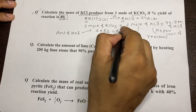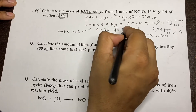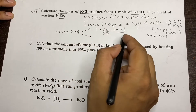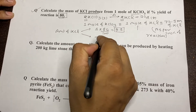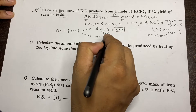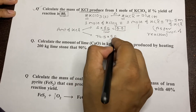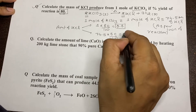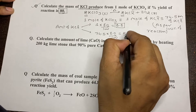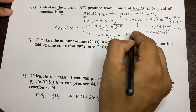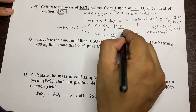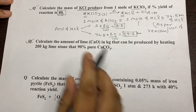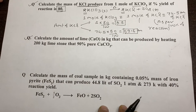That gives 0.8 moles, or in terms of mass: 74.5 grams multiplied by 80%, which gives 59.6 grams of KCl. Now we can take one more example to explain the concept of percentage purity.